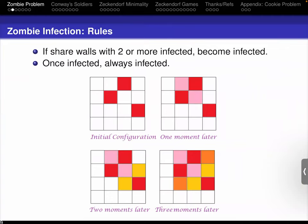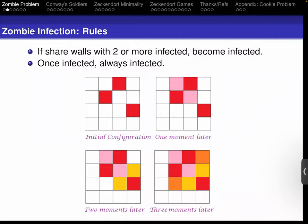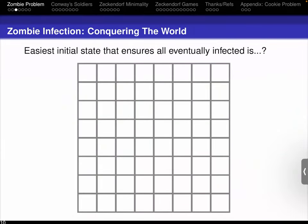Things initially don't look so good for humanity, but the zombie apocalypse stabilizes. We see there is an L-shaped region of the board where the zombies never enter. My question is: can you give me an initial state that ensures that eventually everyone is infected? I want the most smartass easy answer you can think of — give me a configuration of the board that guarantees at some point in time everyone's infected.